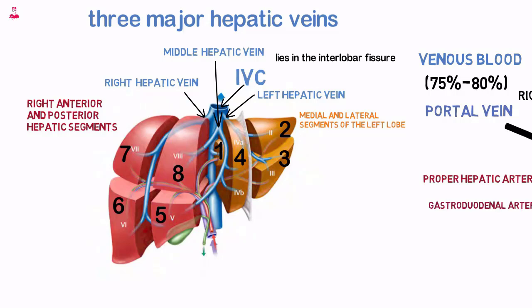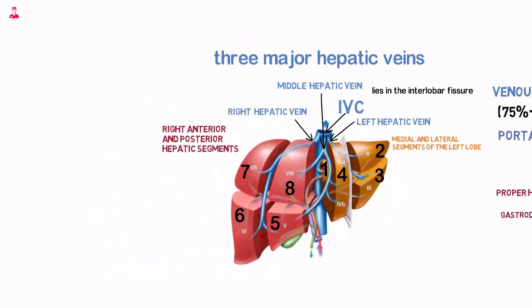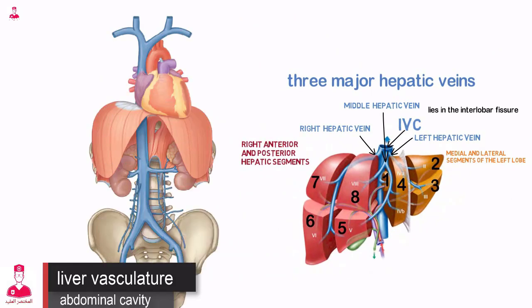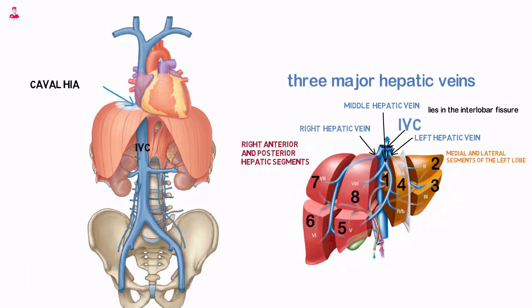Segment 1 drains directly into the IVC through smaller hepatic veins. Frequently, the middle and left hepatic veins converge to form a common trunk before emptying into the IVC just below the diaphragm. The IVC lies in a groove along the posterior wall of the liver, ascends into the thoracic cavity through the caval hiatus of the diaphragm, and enters the right atrium of the heart.